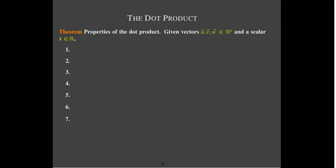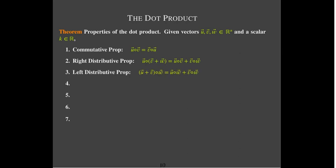Some important properties of the dot product: the dot product looks like multiplication and shares many properties with scalar multiplication. For example, it is commutative — the order in which you form the dot product does not matter, it will give you the same answer. It has distributive properties: if you have v plus w inside parentheses and you dot u either from the left or from the right, you can distribute the dot product across the vectors inside the parentheses. You also have the idea of homogeneity — a word we'll see throughout the course — which means you can factor out a scalar.